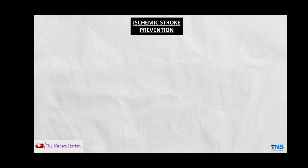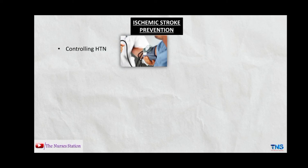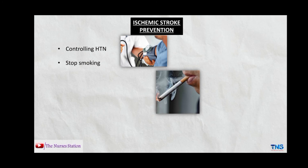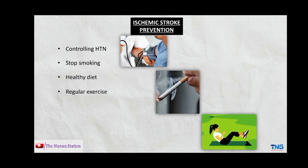Prevention of ischemic stroke depends on controlling risk factors. This includes controlling hypertension, cessation of smoking, having a healthy diet, exercising regularly, controlling weight, and lowering cholesterol levels.